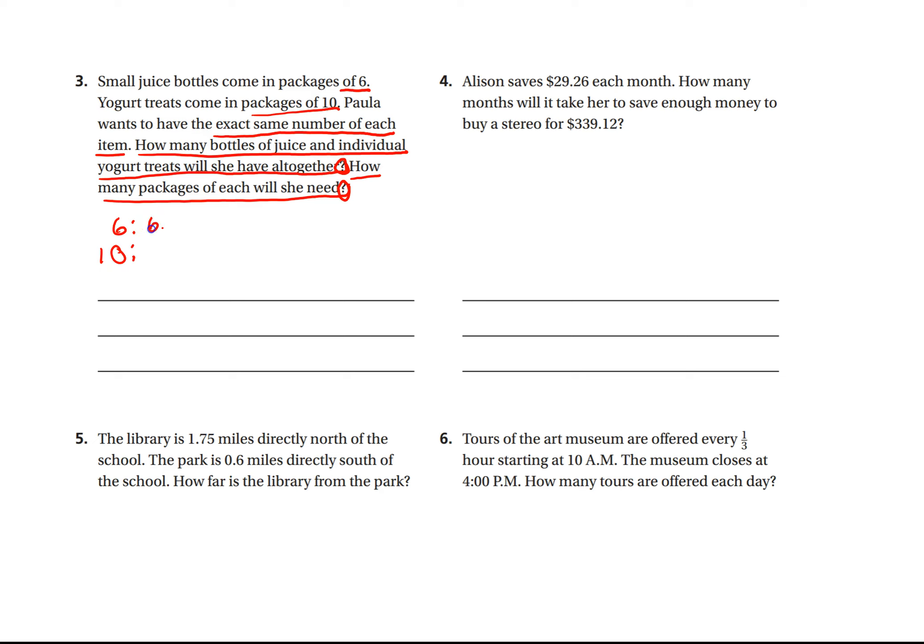So I'm going to count by 6s. 6, 12. These represent the packages. So I buy one package, I have 6 bottles, I buy 2 packages, I have 12. I buy 3, I get 18, 24, 30. 10, 20, 30.